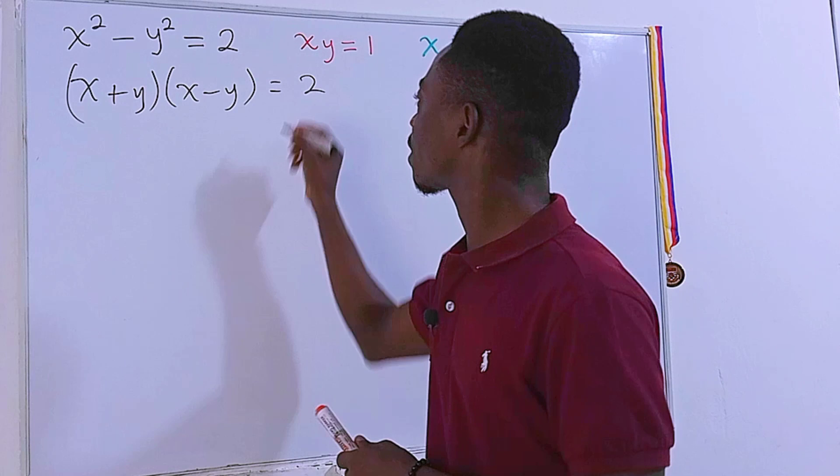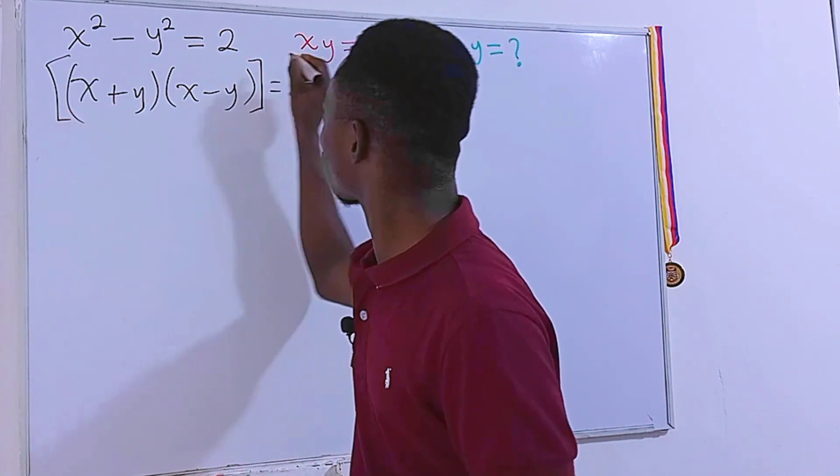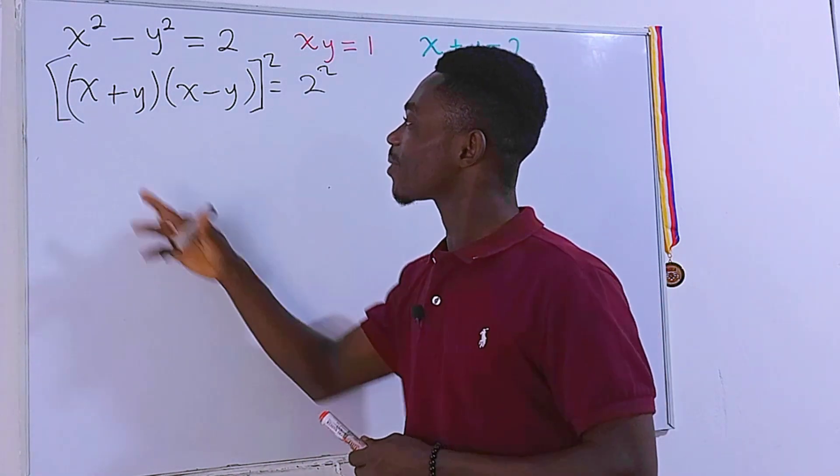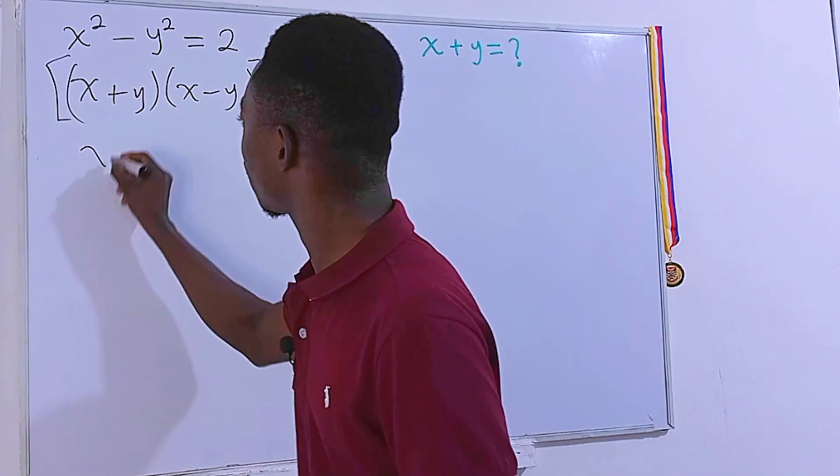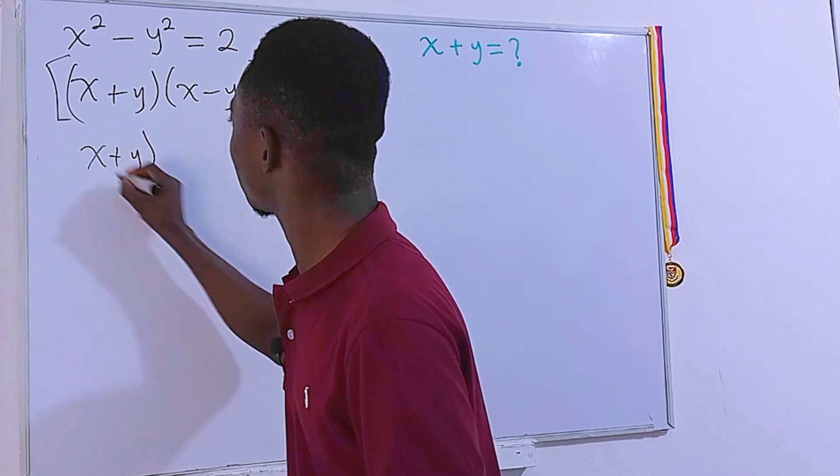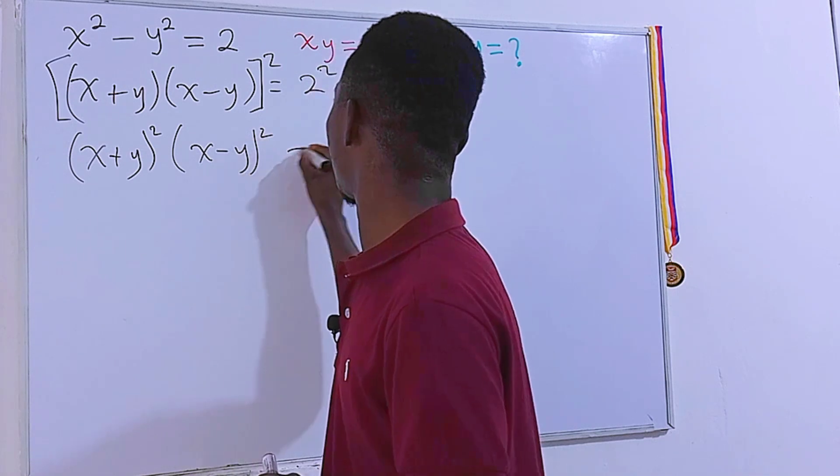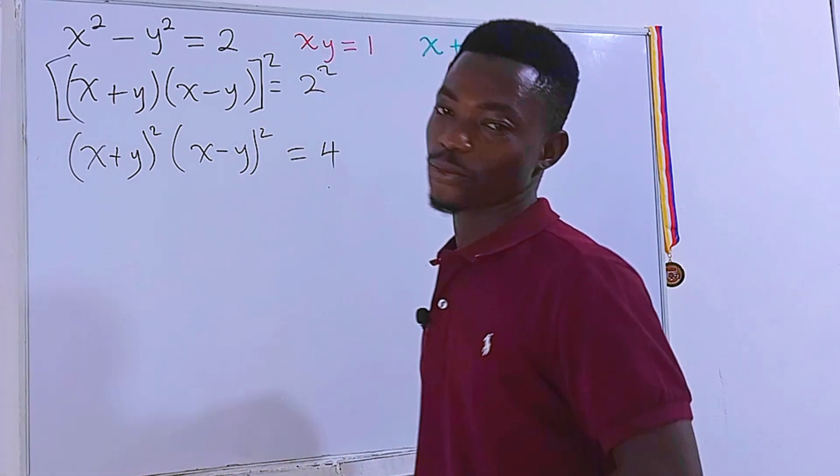We can square both sides just like this. I'm going to put a square bracket, square this, and then square the right-hand side. So on the left-hand side, you have x plus y all squared, then times x minus y all squared, and this is equal to 4.